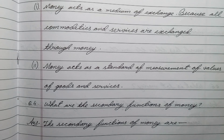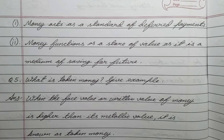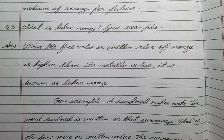Question number four: what are the secondary functions of money? Answer: the secondary functions of money are — number one, money acts as a standard of deferred payments; number two, money functions as a store of value, as it is a medium of saving for future.